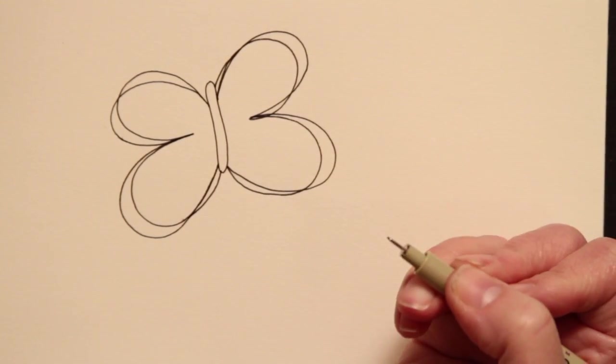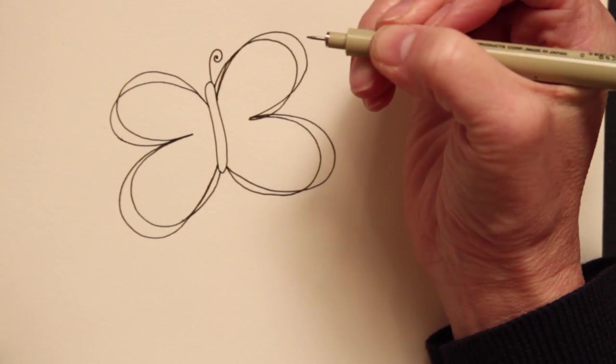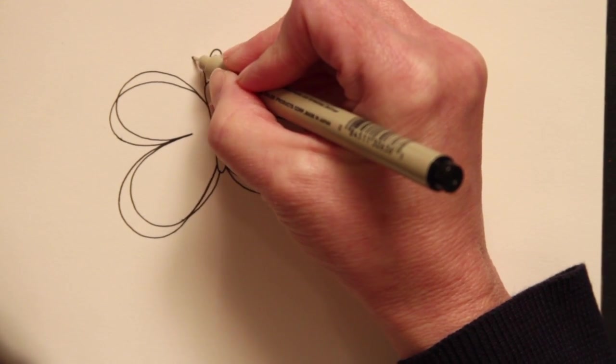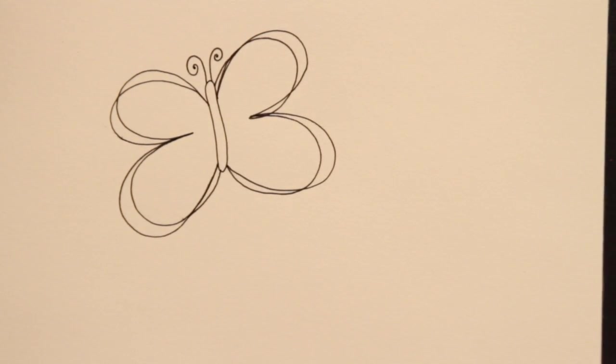The antennas are the most fun. Just come up in a straight line and curl around in a spiral. Do that on both sides and put a little dot in the inside.